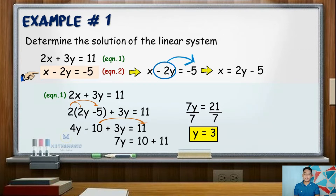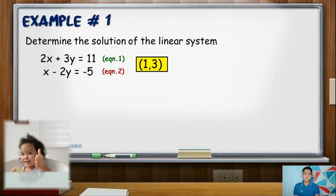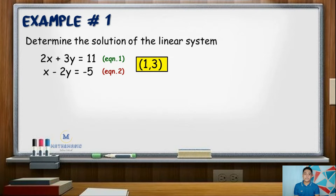After getting the value of y, we substitute it into equation 2 expressed in terms of x. So x equals 2y minus 5. Since y equals 3, the right side is 2 times 3 minus 5. 2 times 3 is 6, and 6 minus 5 is 1. Hence, the solution set of the linear system is (positive 1, positive 3). To check, you may substitute these values into either of the two equations.